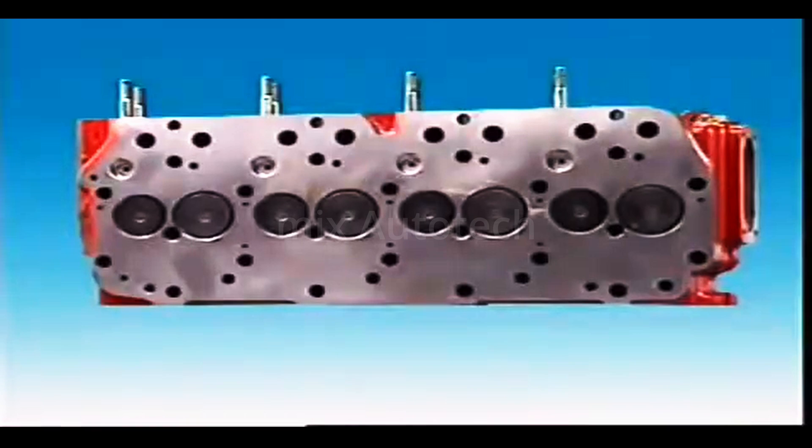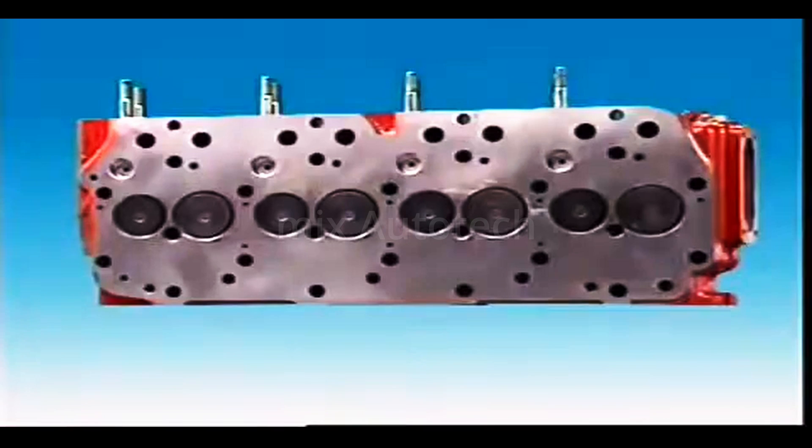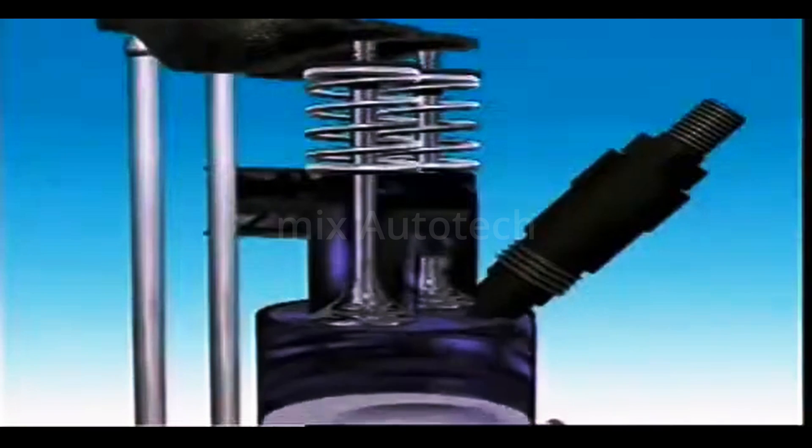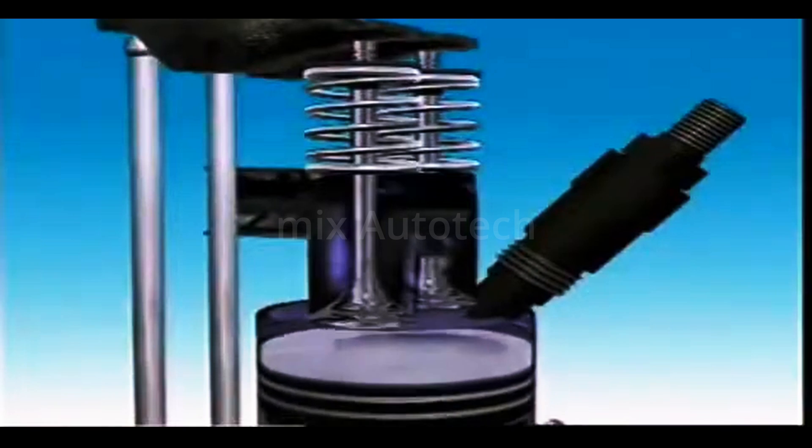Engines using direct injection have cylinder heads with a flat face. The combustion chamber is formed in the top of the piston. Sometimes the rim of the piston provides squish, forcing the air to the center of the combustion chamber.